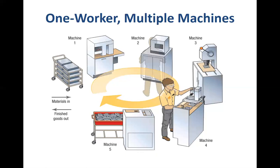Some of these machines might be automatic, and hence the role of the worker might be just to ensure that once that machine has completed its processing, the product can be moved to the next machine. For some there would be some manual activity. By doing so, the worker has complete ownership in how that product is moving between machines — the flow of the product and also the quality of the output coming from each of the machines.